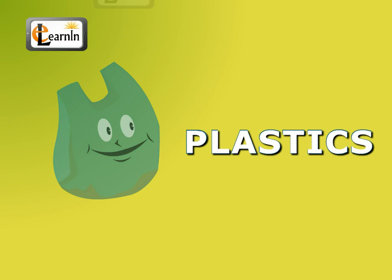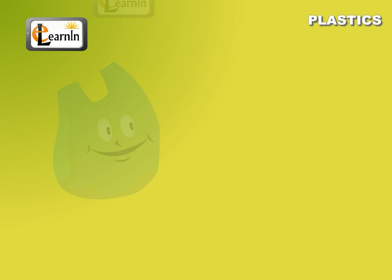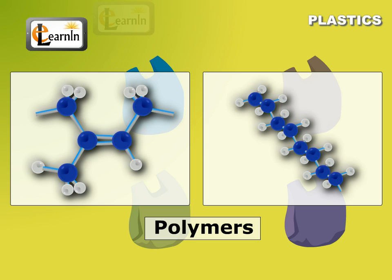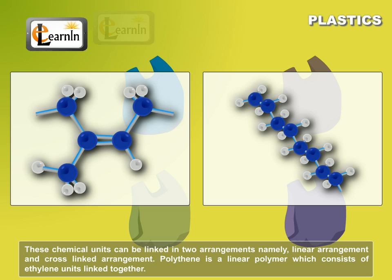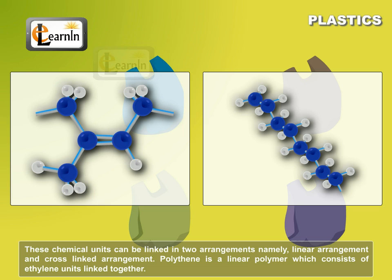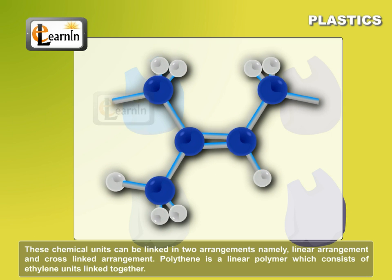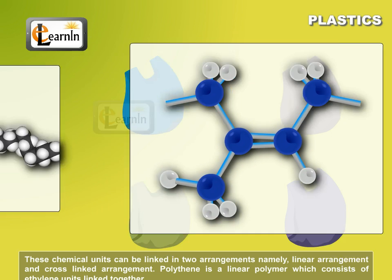Plastics are polymers of chemical units which are linked together. These chemical units can be linked in two arrangements, namely linear arrangement and cross-linked arrangement.